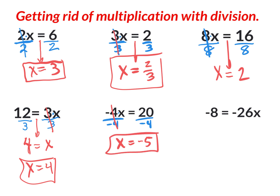The solution is x equals negative five. Finally, the last question on these one-step equations: negative eight equals negative twenty-six times x. The x is on the right side of the equal sign. I want to get x by itself on the right side — I don't want this negative twenty-six. This does not say x minus twenty-six; if it did, I would get rid of the minus twenty-six by adding twenty-six. But it says negative twenty-six times x.